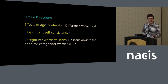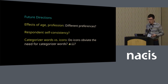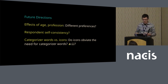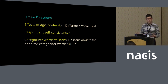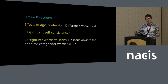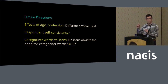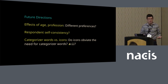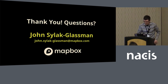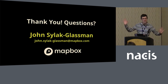One thing I'm quite interested in is the idea of categorizer words versus icons. Would icons actually obviate the need for categorizer words? And would the potential iconicity of certain Chinese characters cause a trade-off for icons versus characters? Iconicity is a highly problematic linguistic issue, so I just want to raise that. Thank you very much, and questions at the end.